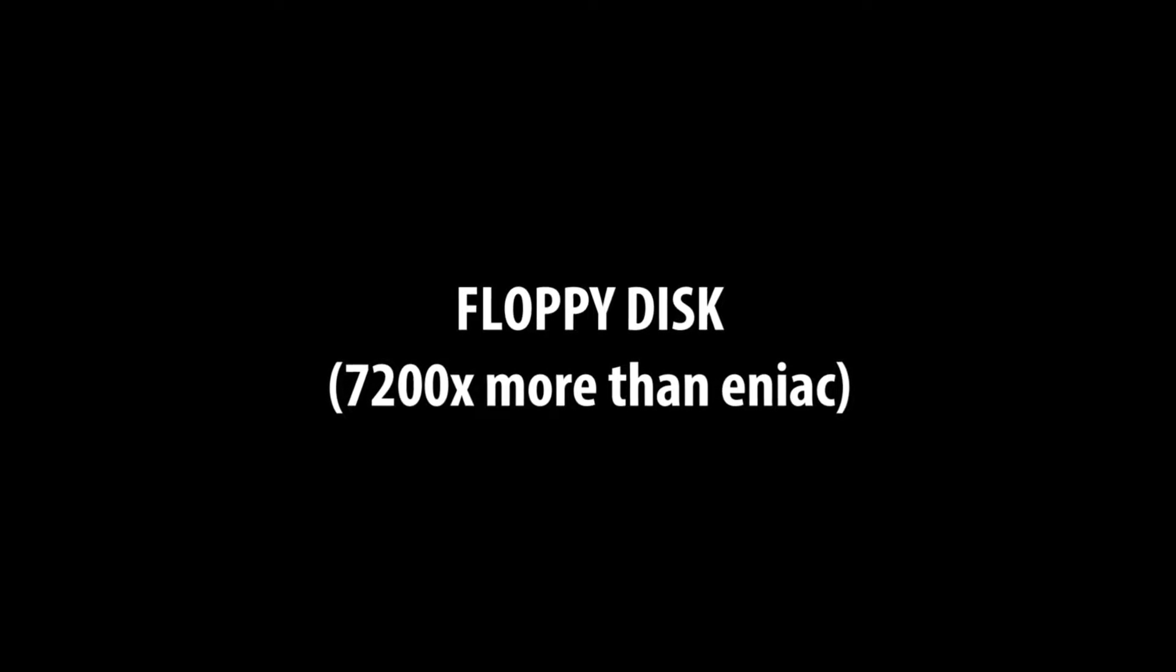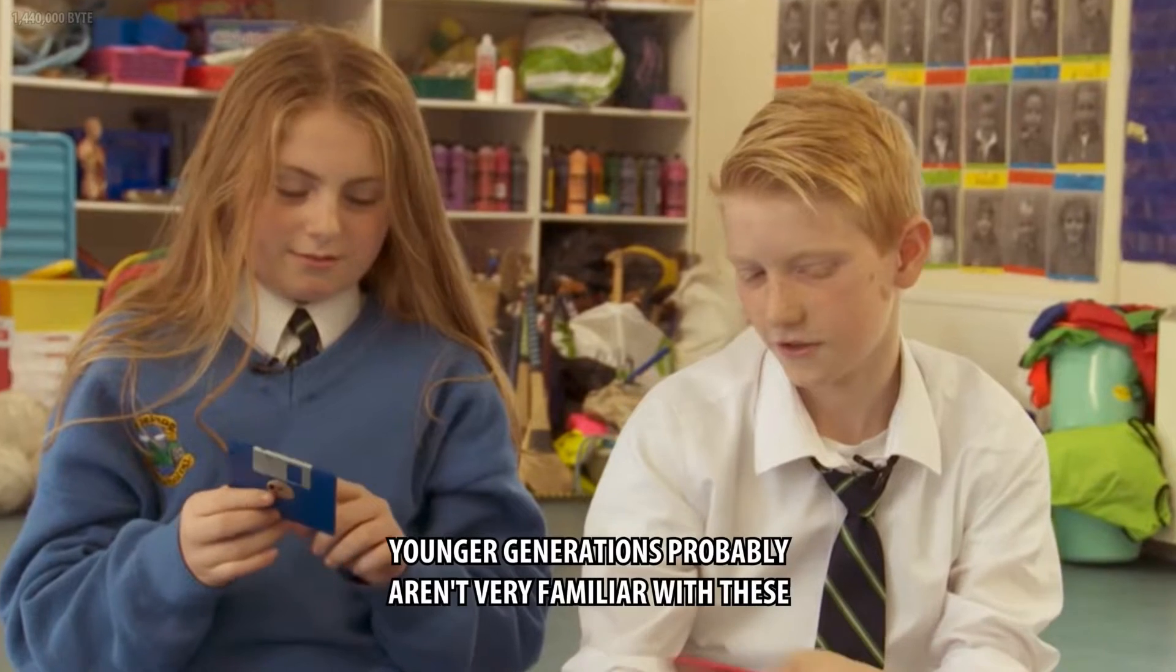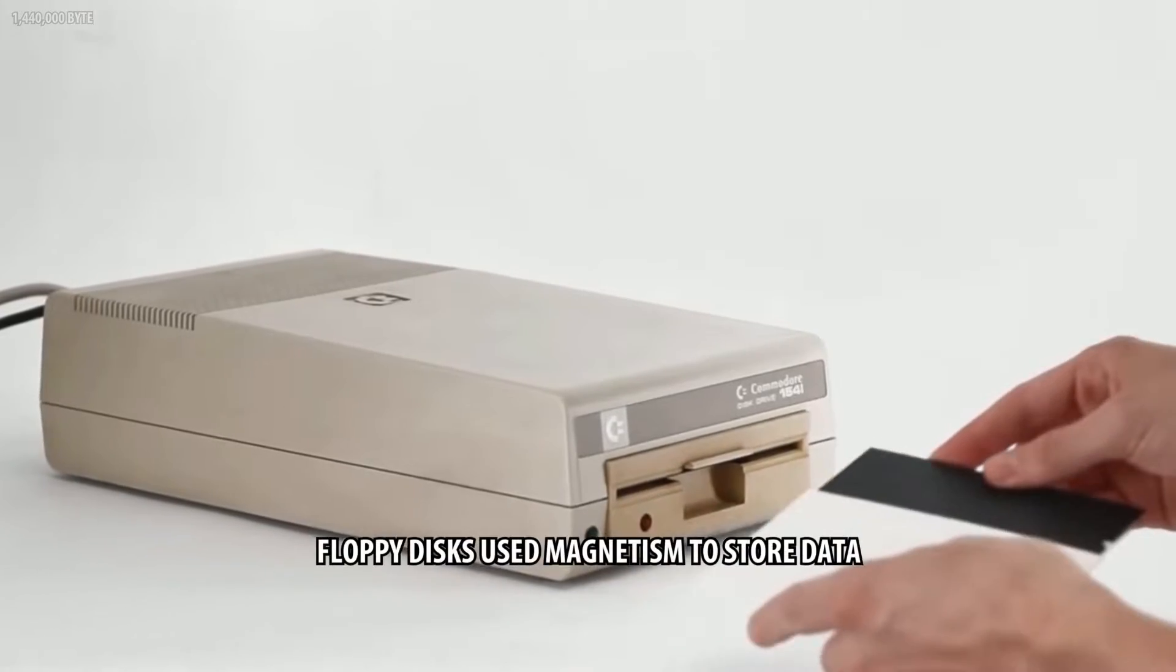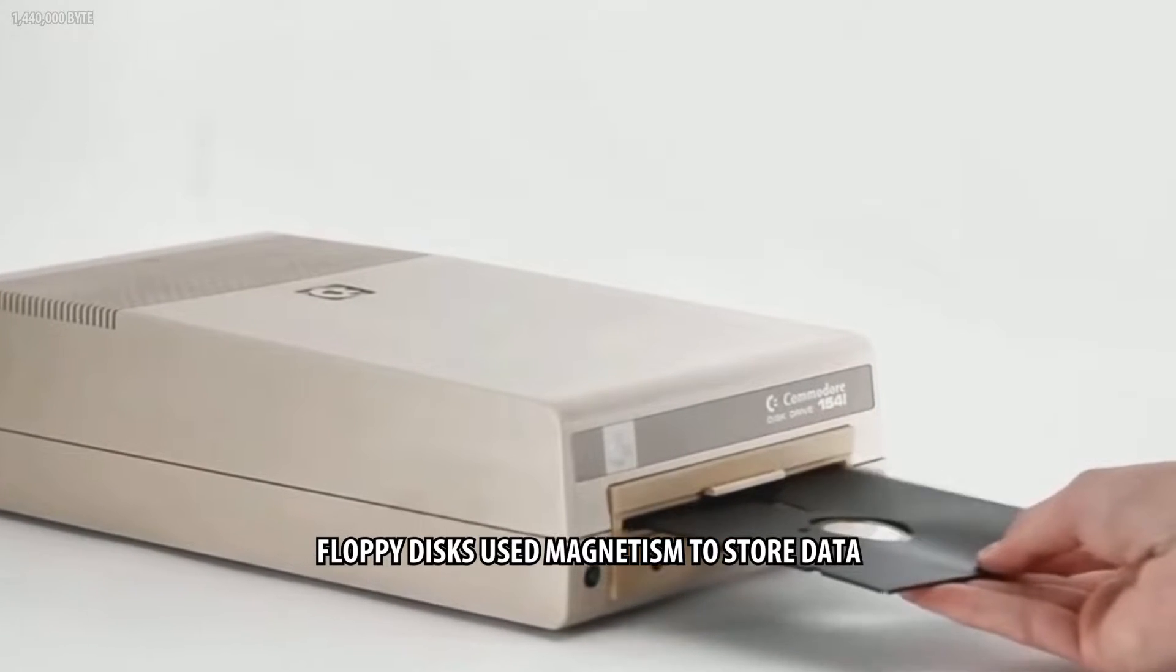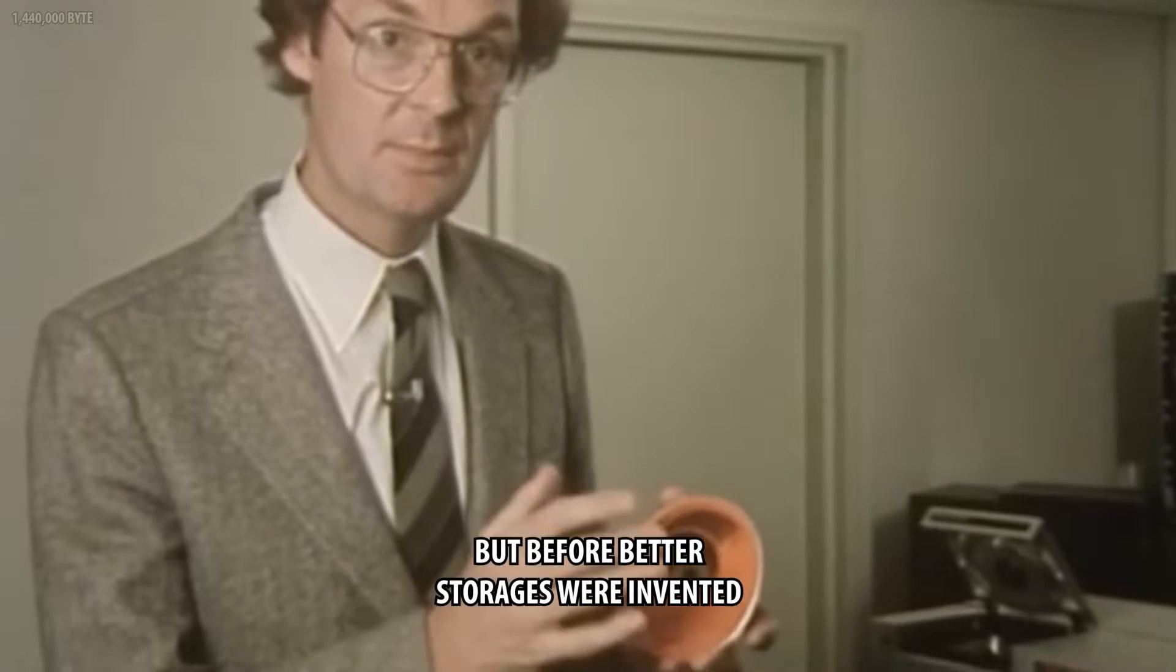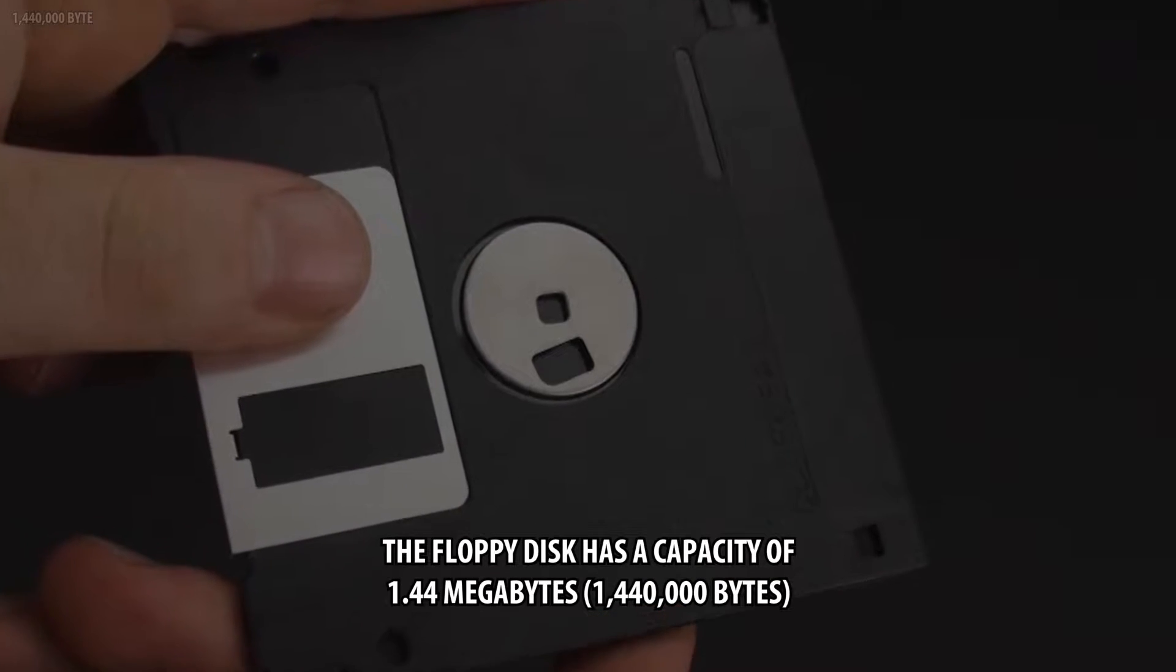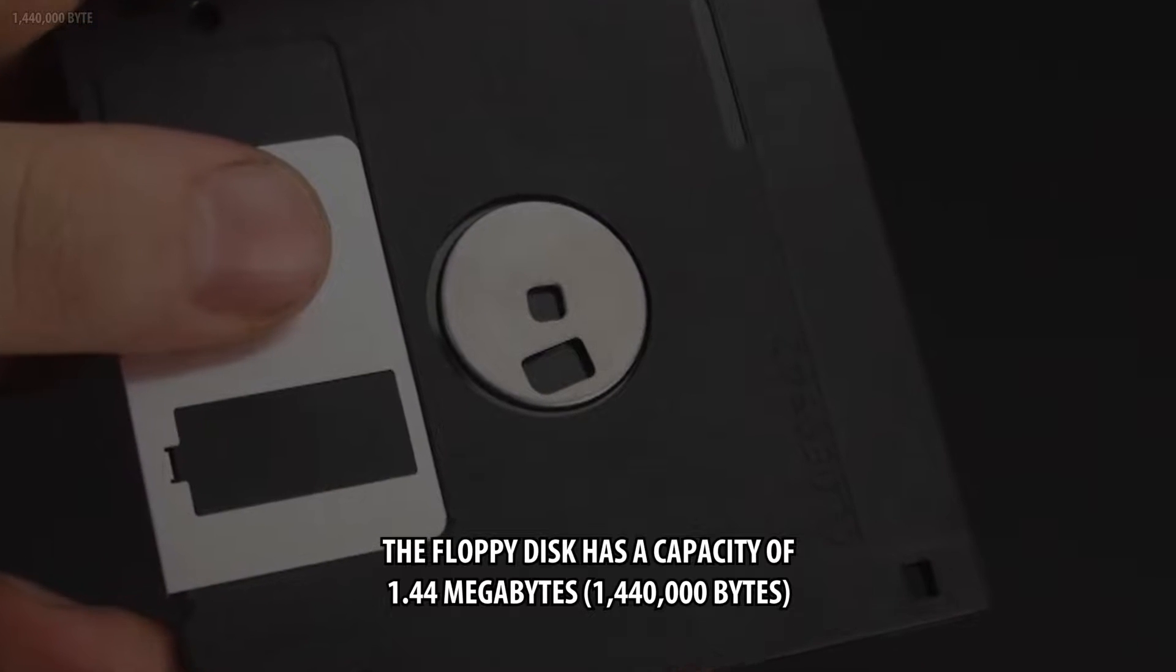Floppy disks, 7200 times more than ENIAC. Younger generations probably aren't very familiar with these. Floppy disks used magnetism to store data. Before better storages were invented, floppy disks were commonly used for small files. Because of its size it was used mostly for text files or a few low quality images. The floppy disk has a capacity of 1.4 megabytes.